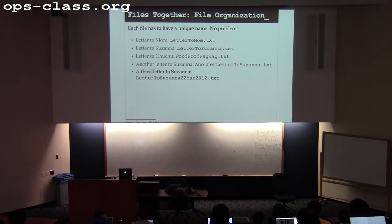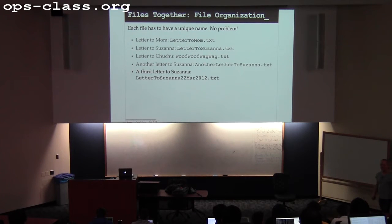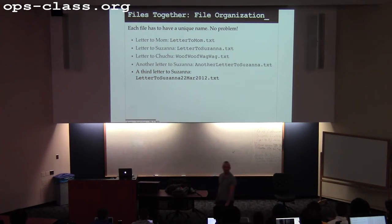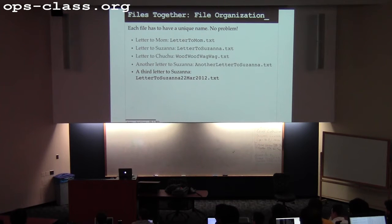It's even worse if, like some early file systems, you have restrictions on how long the file name can be. Most of you are still living underneath this bizarre restriction — probably the most bizarre restriction in all of computing history. How many people have been abused by the limitations of Unix in some way, shape, or form?